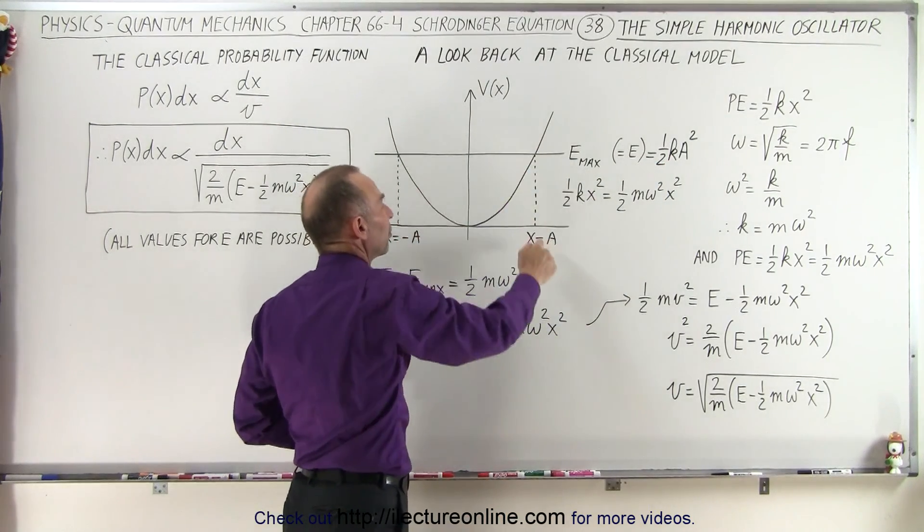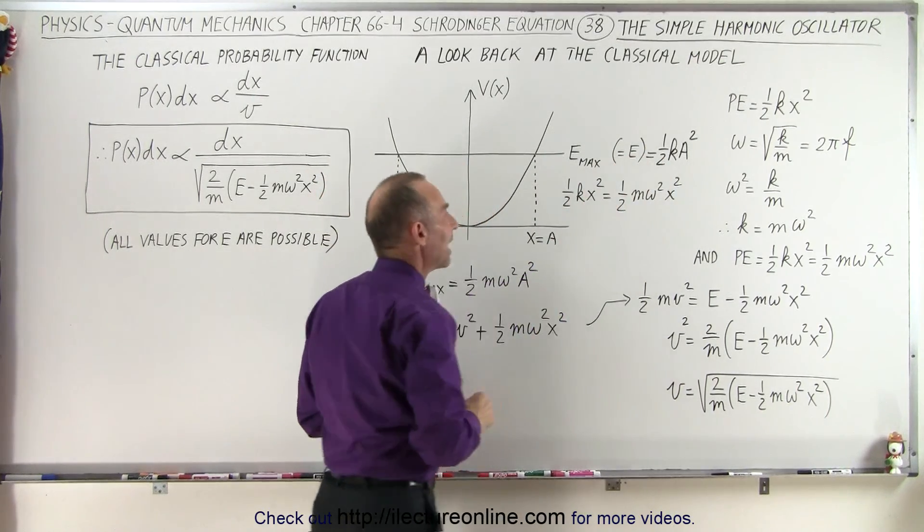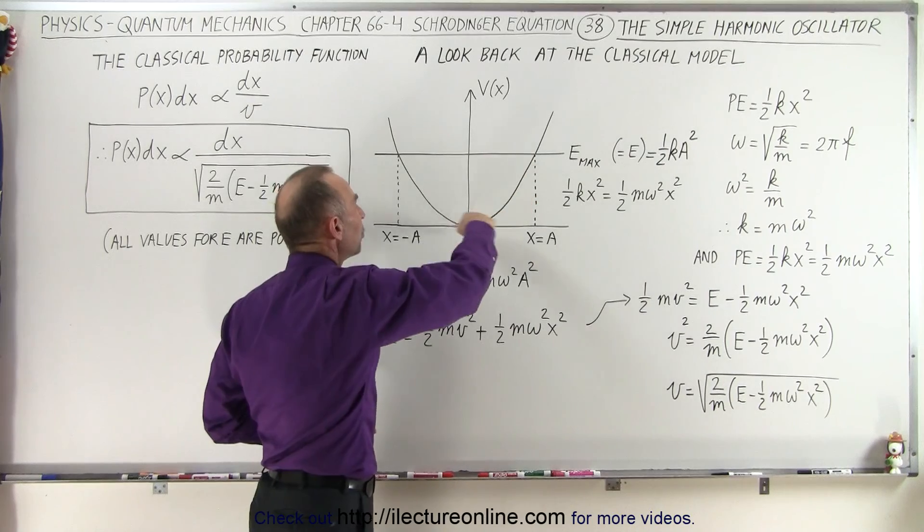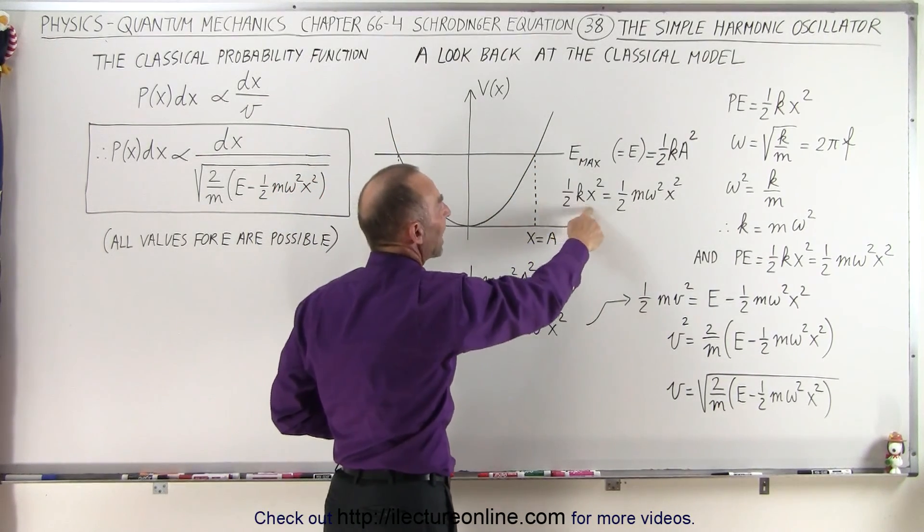When we come back to the other direction, when we reach the maximum distance, the maximum energy again is one-half ka squared. And anywhere in between, the potential energy is equal to one-half kx squared.